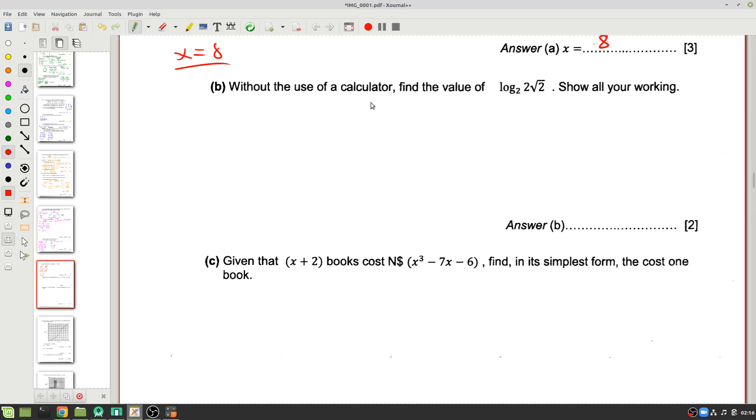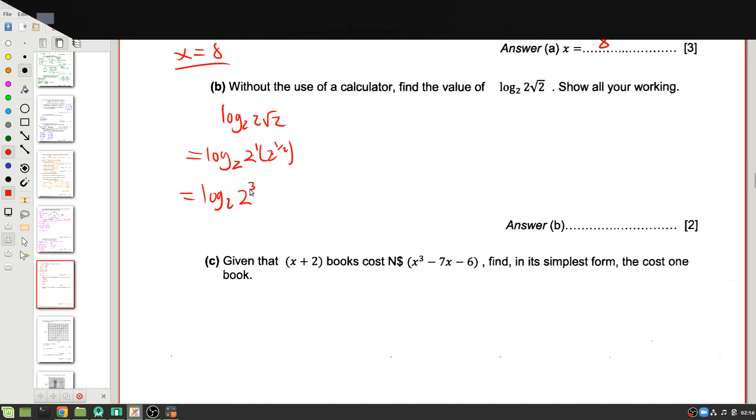Without the use of a calculator, find the value of log with a base 2 of 2 times square root 2, lots of 2s. Okay, a couple of ways again we can approach this. I think I'm going to start by rewriting the root as an exponent. I'm going to say that's the same as log, keep the base at 2, and then we've got a 2 multiplied by, and instead of square root of 2, I'm going to write 2 to the power positive half. Now, we know that if we're multiplying and the bases are the same, then we add the exponents. So what is 1 plus 1 half? That's 1 and 1 half, or 3 over 2.